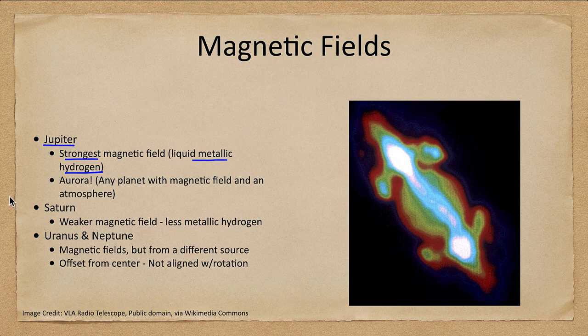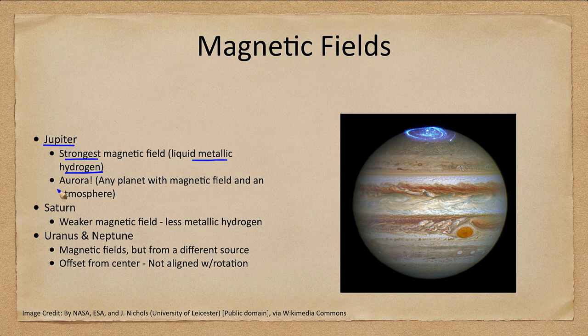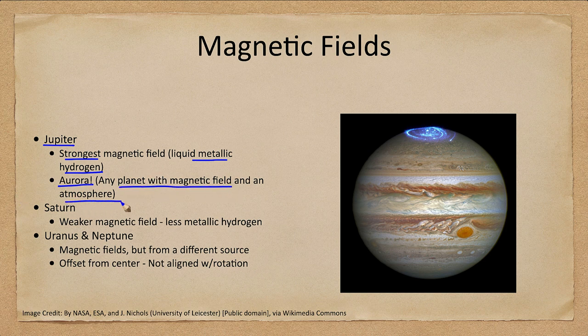Jupiter also has aurora, and we see an image of that here. Aurora on Earth are caused by charged particles from the Sun funneled along magnetic field lines. Jupiter also has a very strong magnetic field that pushes away charged particles from the solar wind — they hit Jupiter near its north magnetic pole and cause it to glow as well. We see aurora on any planet with a magnetic field and an atmosphere. The only other planet with a magnetic field we've looked at was Mercury, and it does not have an atmosphere; Venus and Mars have an atmosphere but did not have magnetic fields to give aurora.